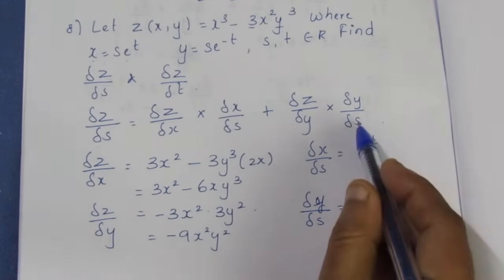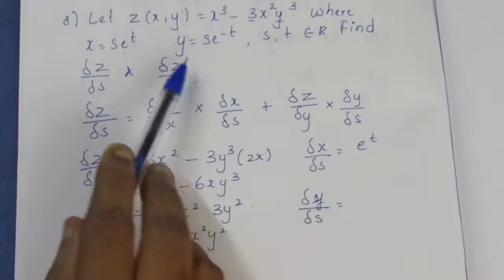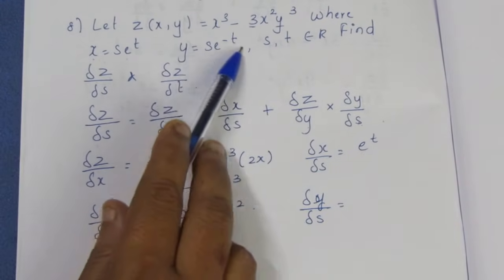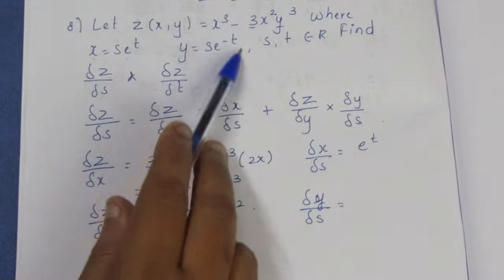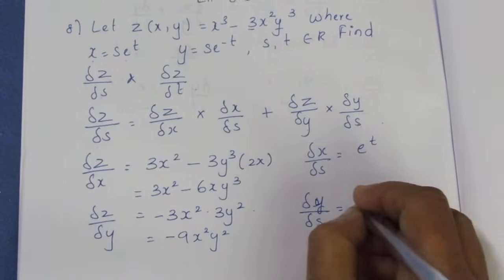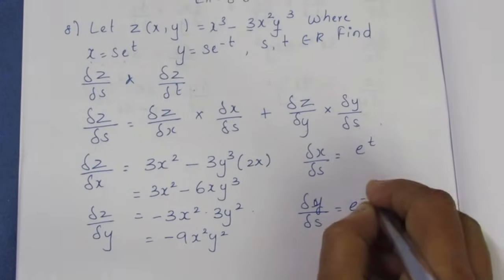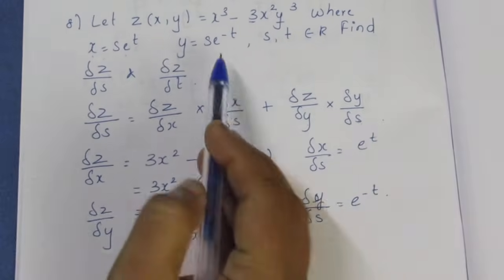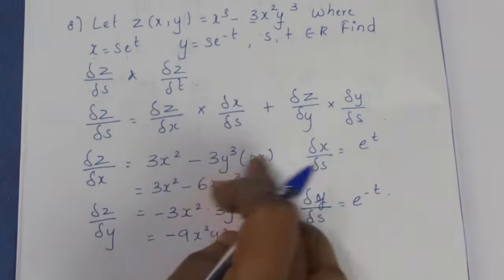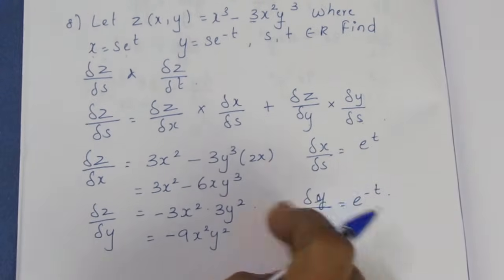Now ∂y/∂s: since y = se^(-t), differentiating with respect to s gives e^(-t). The s differentiates to 1, so ∂y/∂s = e^(-t).